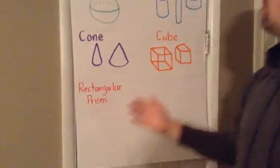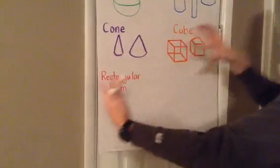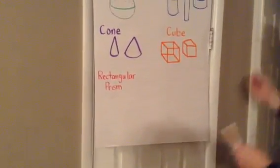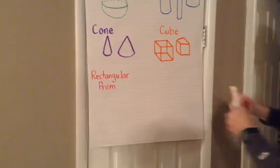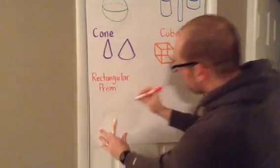The rectangular prism is a lot like the cube, we're just going to kind of stretch it out. So we'll start, I'll show you two different ways. We'll start with a square,